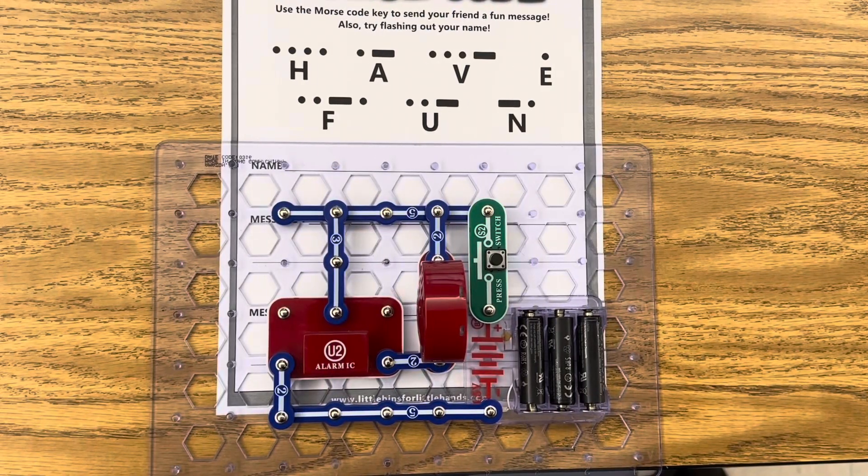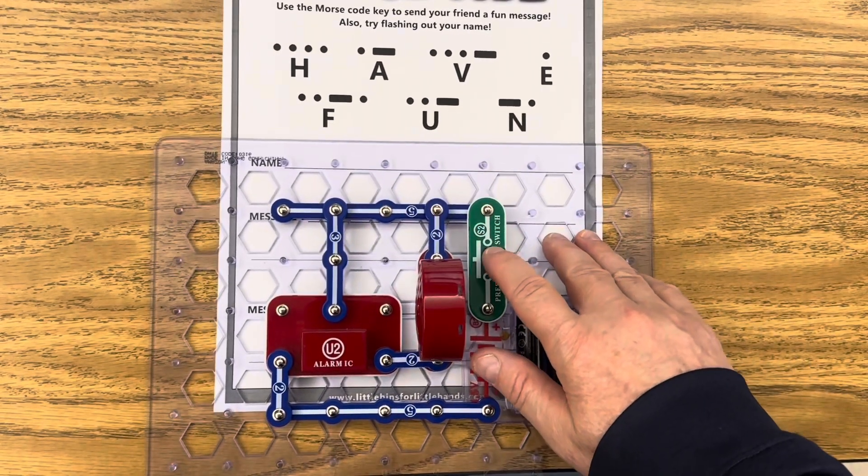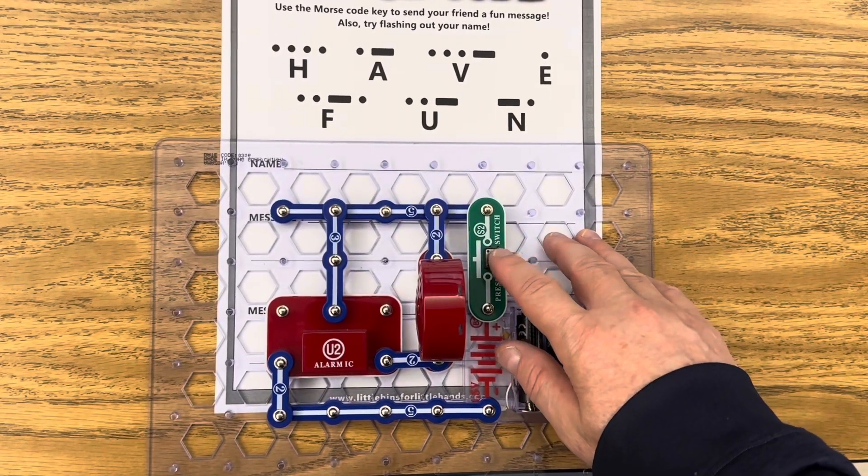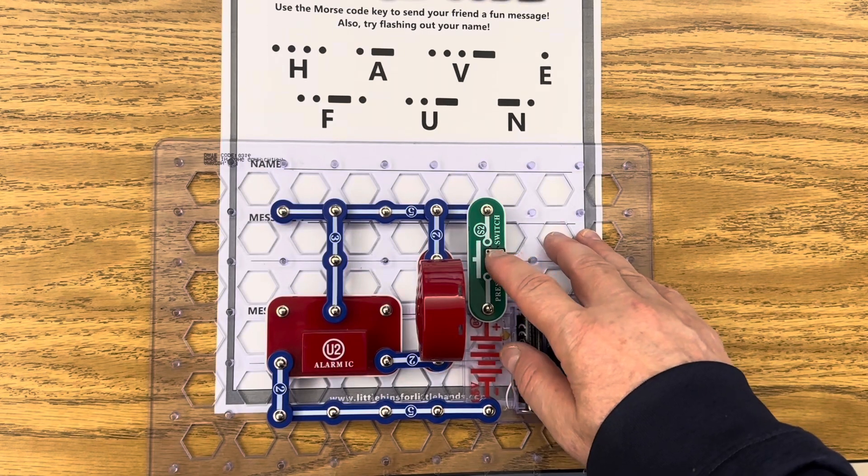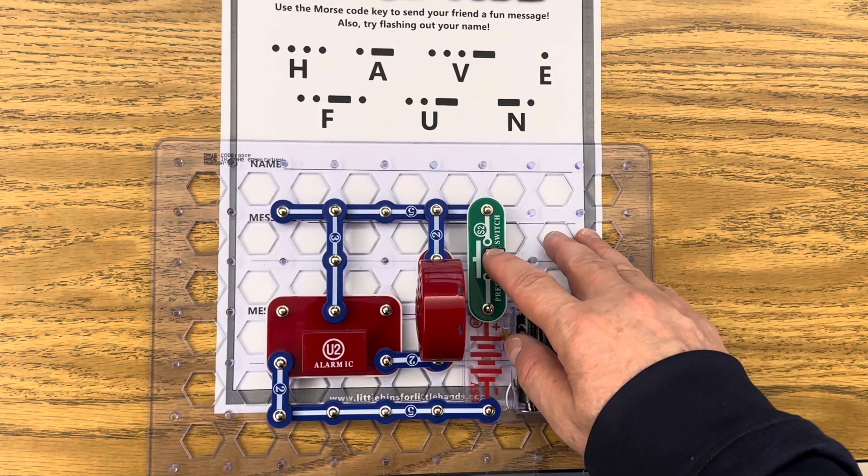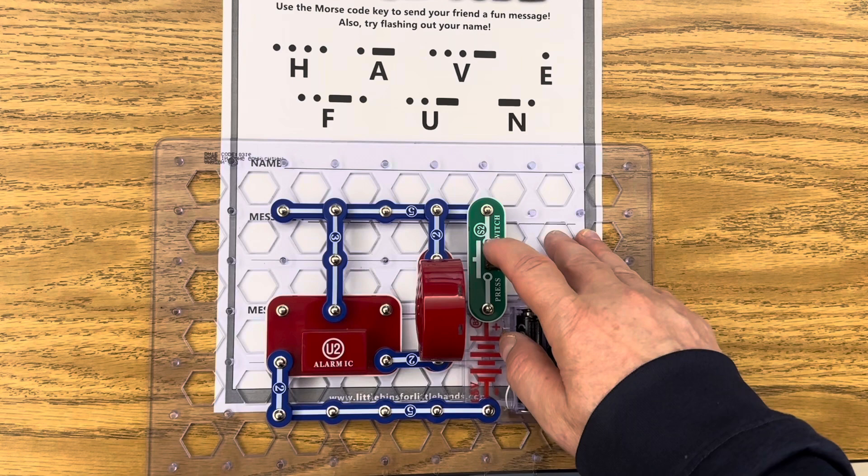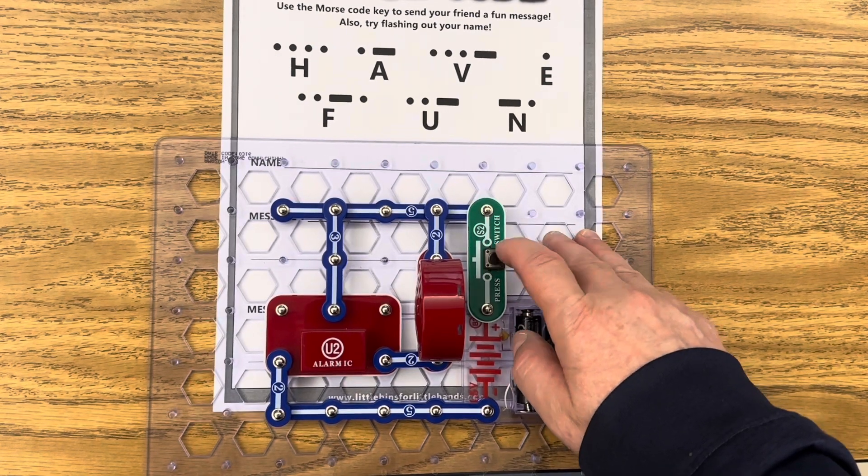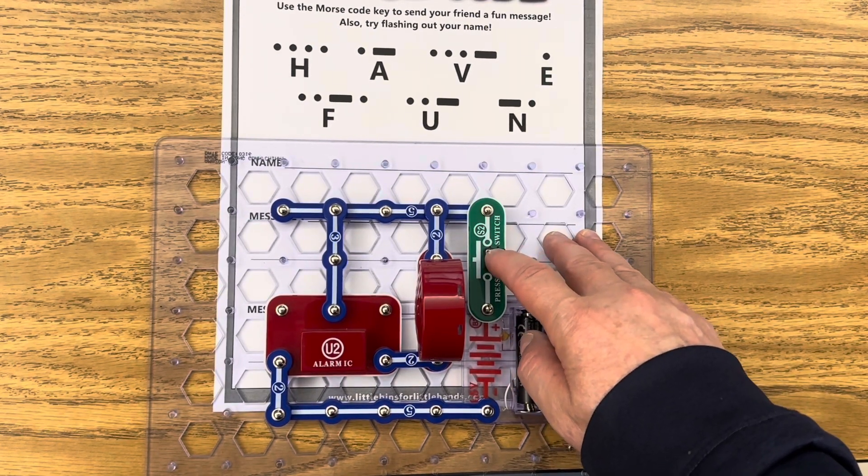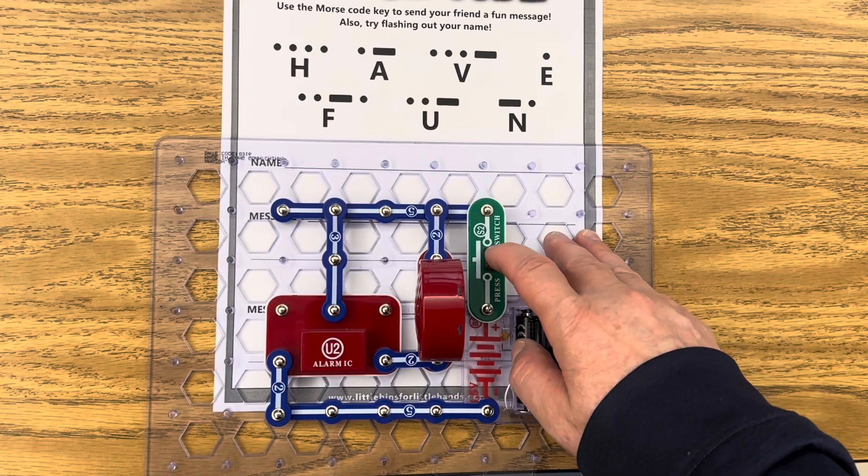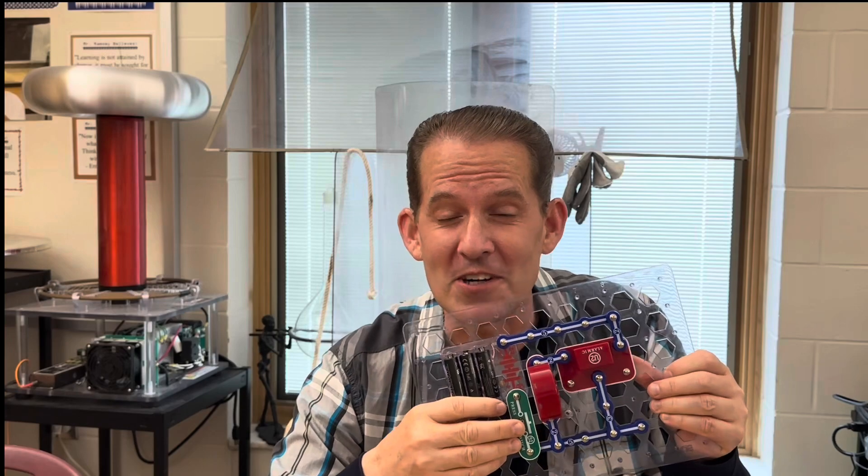Now let's try coding the phrase have fun. It's just a fun way to learn the Morse code using junior snap circuits.